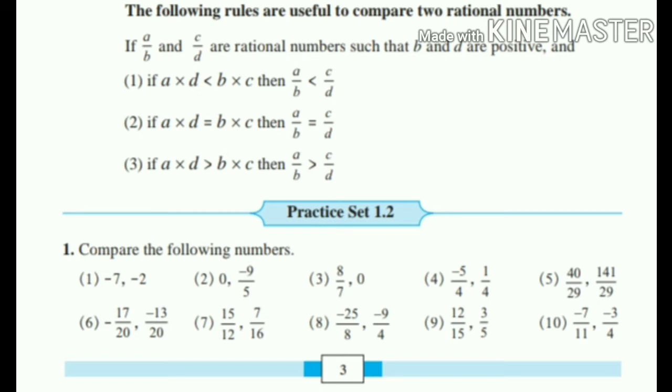Here, rules are useful to compare two rational numbers is given. If A by B and C by D are rational numbers such that B and D are positive. And first is, if A into D is less than B into C, then A by B is less than C by D. If A into D is equal to B into C, then A by B is equal to C by D.